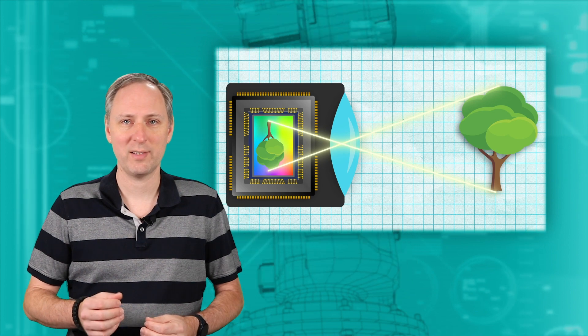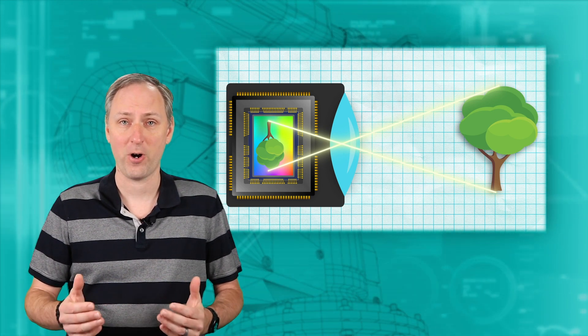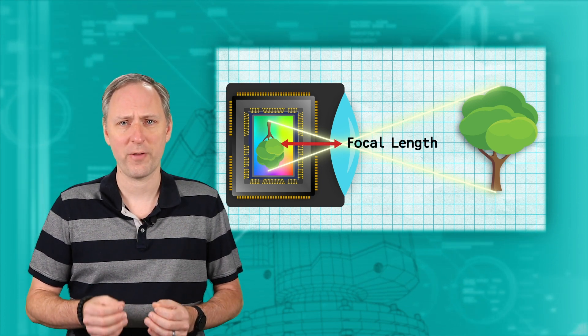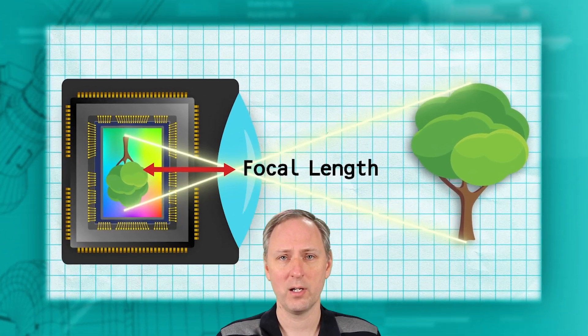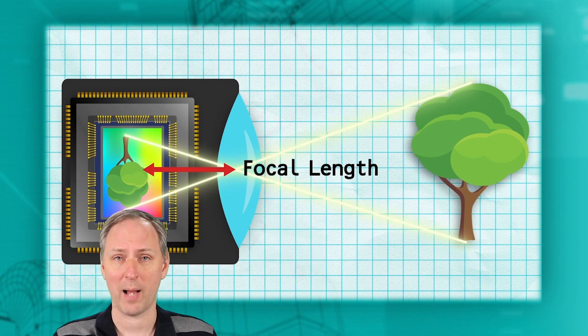Besides the resolution and sensor size, the other critical dimension of a camera is how far the image sensor is from the lens of the camera. This distance is called the focal length of the camera. We can use the focal length information later to help us determine an object's location.